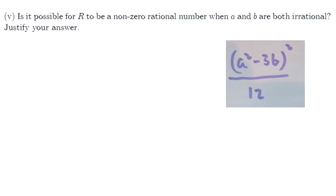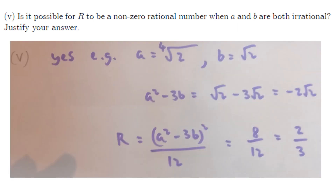Part 5: can R be a non-zero rational when a and b are both irrational? Yes — pick a = 2^(1/4) and b = √2. Then a² = √2 and 3b = 3√2, so a² − 3b = √2 − 3√2 = −2√2, and (a²−3b)² = (−2√2)² = 8. Thus R = 8/12 = 2/3, which is rational. The key is ensuring the irrational parts combine into a single surd that squares to a rational number.